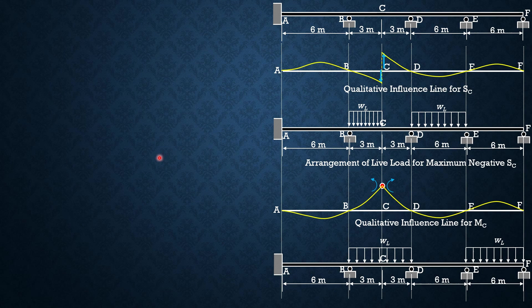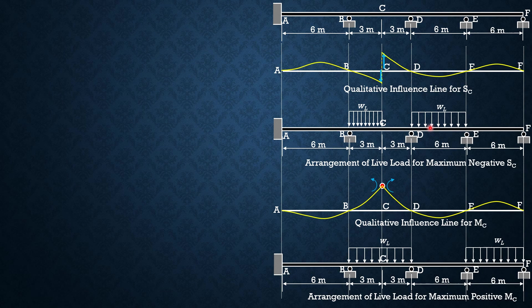So that's it. Based on this, I hope you were able to follow the explanation and solutions. When you are confronted with problems on maximizing a specific response function, you should be able to arrange the live load in a way that causes maximum influence or effect on that required function, using the method of analyzing continuous beams — either three-moment equations or slope deflection equations — then answer the possible questions. That's it for this problem.